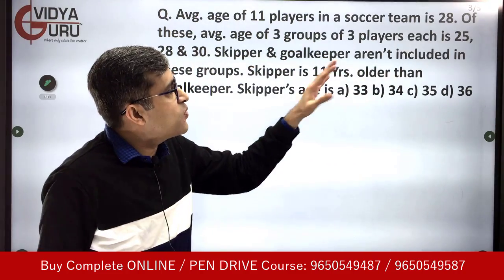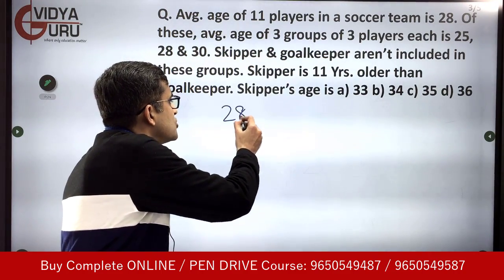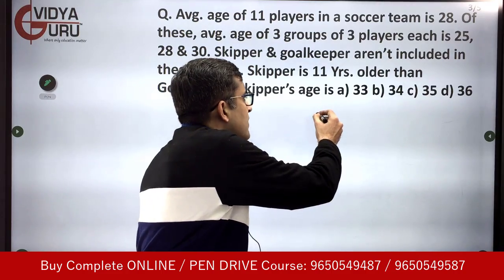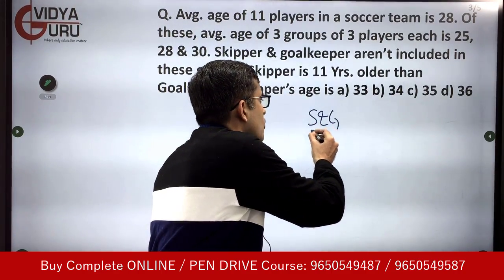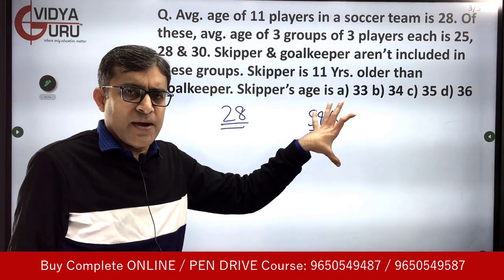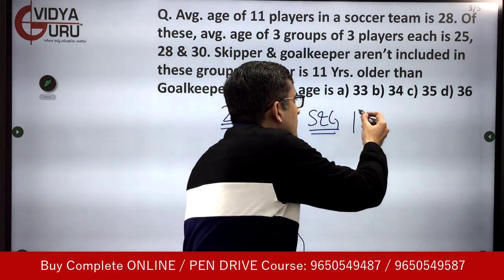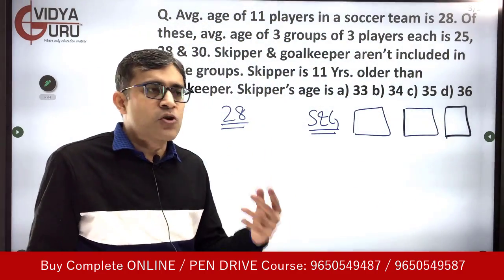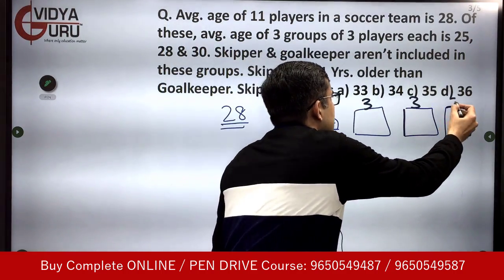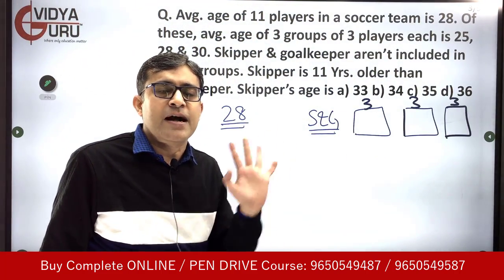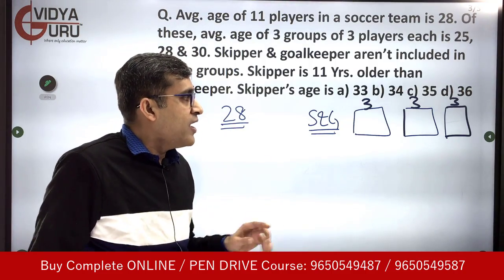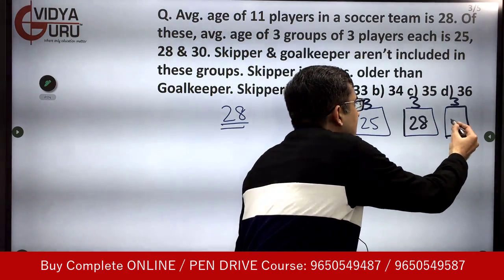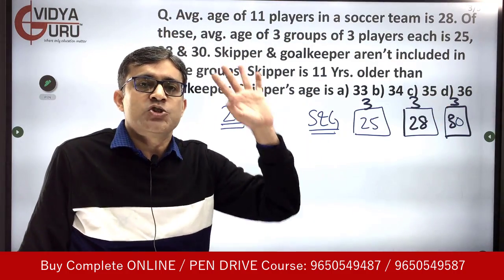The average age of the entire team is 28. We have three groups of 3 players each (totaling 9), plus skipper and goalkeeper (2), giving us 11 total — but wait, that's 11, let's recount: 3+3+3+2 = 11. The overall average is 28. The group with an average of 28 will not affect the overall average at all. So the impact comes only from the first group (average 25) and the third group (average 30).